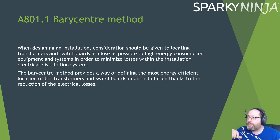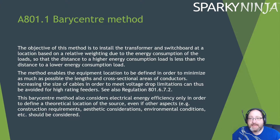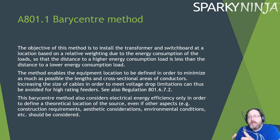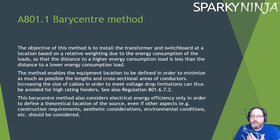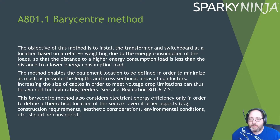The objective is to install the transformer and switchboard at a location based on a relative weighting due to the energy consumption of the loads, so the distance to a high energy consumption load is less than to a low energy consumption load. We're talking about the point of origin and the sub-main distribution — mainly the decision on where to put the plant room. The method enables equipment location to be defined to minimize conductor lengths, avoid oversized cables for voltage drop, and reduce energy losses.